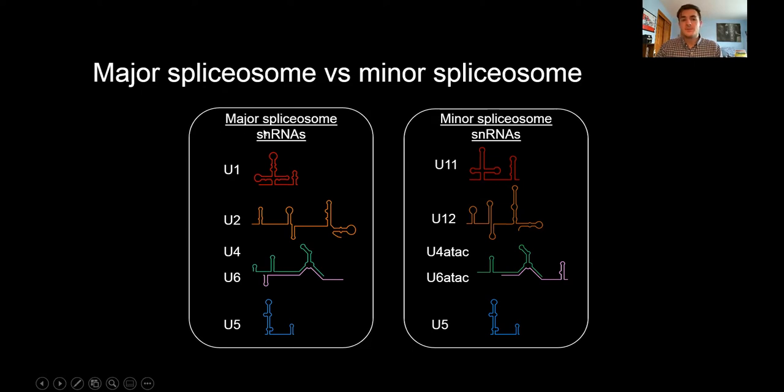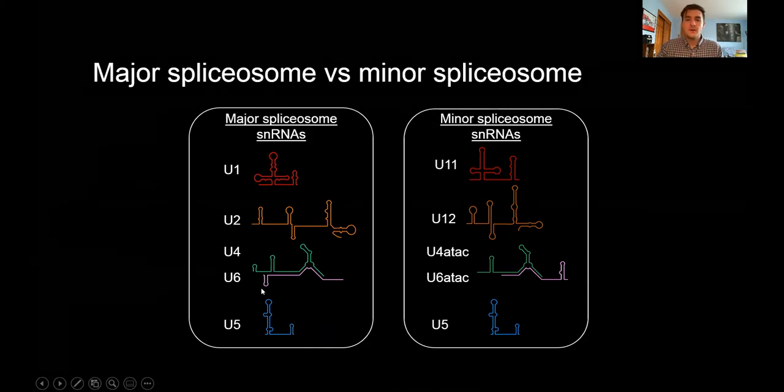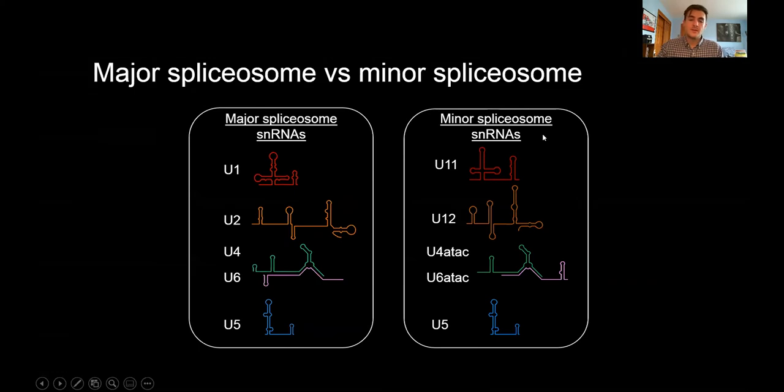Whereas the major spliceosome splices major introns and is composed of the SNRNAs U1, U2, U4, U6, and U5, the minor spliceosome recognizes and splices minor introns and is composed of sequentially divergent but structurally analogous SNRNAs U11, U12, U4-ATAC, U6-ATAC, and shares the U5 SNRNA with the major spliceosome.